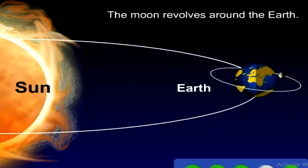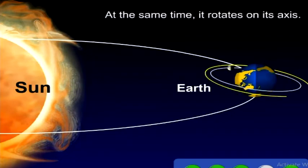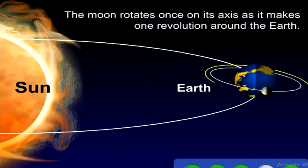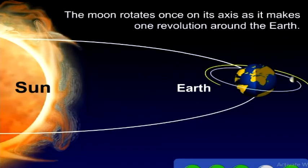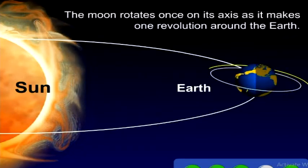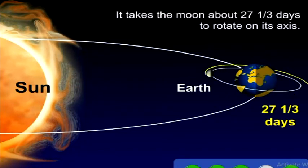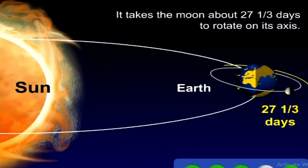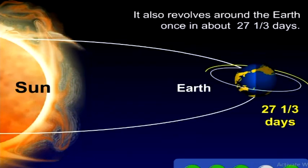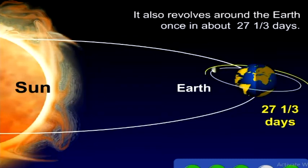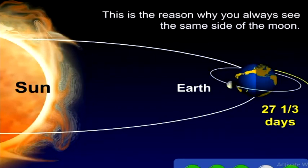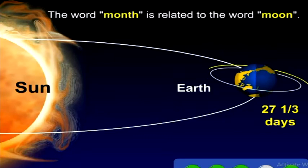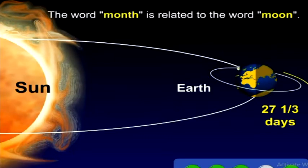The moon revolves around the Earth. At the same time, it rotates on its axis. The moon rotates once on its axis as it makes one revolution around the Earth. It takes the moon about 27 and one-third days to rotate on its axis. It also revolves around the Earth once in about 27 and one-third days. This is the reason why you always see the same side of the moon. The word month is related to the word moon.